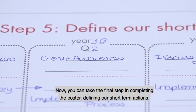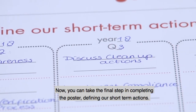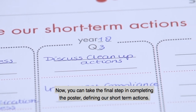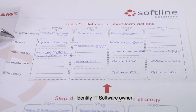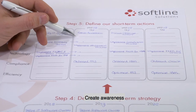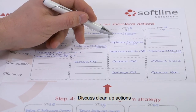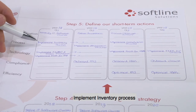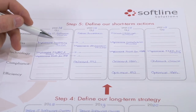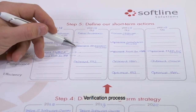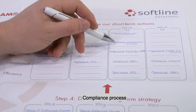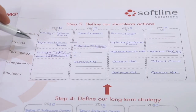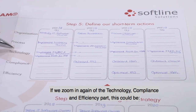You can take the final step in completing the poster: defining our short-term actions. Identify IT software owner, create awareness, discuss cleanup actions, implement inventory process, verification process, and compliance process.